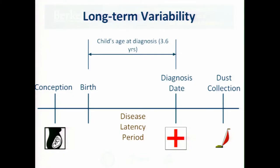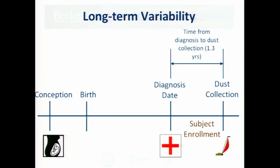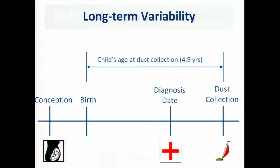To be specific about how long these time periods can actually be, the mean time between the child's birth and the date of diagnosis in our study is about three and a half years. So we have that latency period to deal with. And then there's an additional year between when the child's diagnosed and when we're actually able to go and get the dust sample. So together, the time between when the child was born and when the dust is collected could be as long as five years.